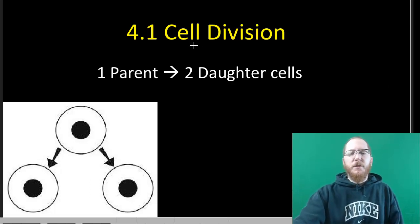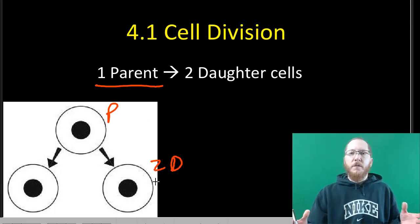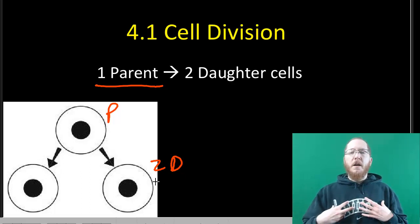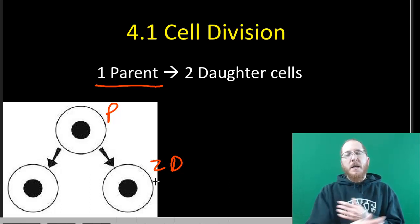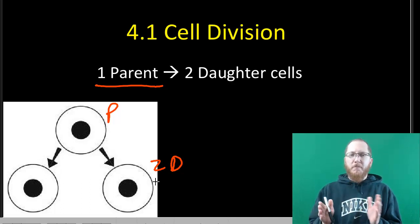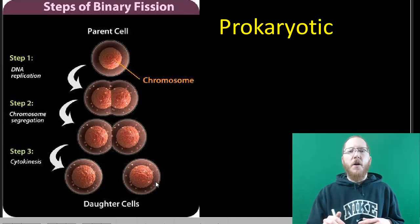Starting off, cell division is this idea of taking one parent cell, especially important for unicellular things, and they will split to form two daughter cells. So this is our parent, and these are the two daughter cells that we produce. Now for unicellular organisms, this will be synonymous with reproduction. This is how they make more of themselves. With multicellular organisms like us, this will also be tied to other things like growth, repair if you have a cut, not just this idea of reproduction.